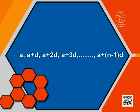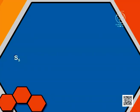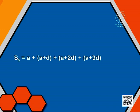Now we will be taking the sum of first 5 terms from this sequence. What will be the sum of first 5 terms? S5 is represented as A plus A plus D plus A plus 2D plus A plus 3D plus A plus 4D.